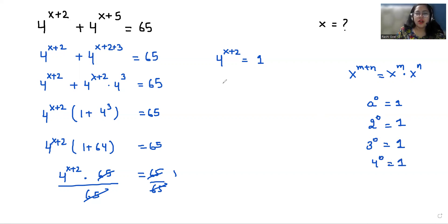So this one we can replace with 4 power 0. So x plus 2 equals 0. So the value of x is minus 2 in this case.